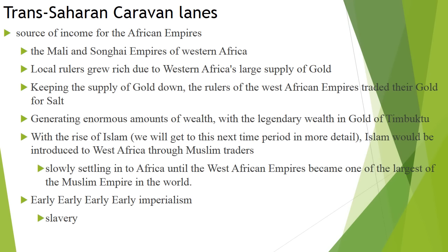The Trans-Saharan caravan lanes — 'trans-Saharan' meaning across the Sahara Desert — used camels and labor animals to cross. This is a source of income for the African empires on the Gold Coast: Mali, Songhai, and other western African empires that we'll look at next time period. They control these routes and, most importantly, gold — a very large supply of gold mined from these regions. To keep the supply of gold limited, they trade it sparingly for salt from the northern sections near the Mediterranean.